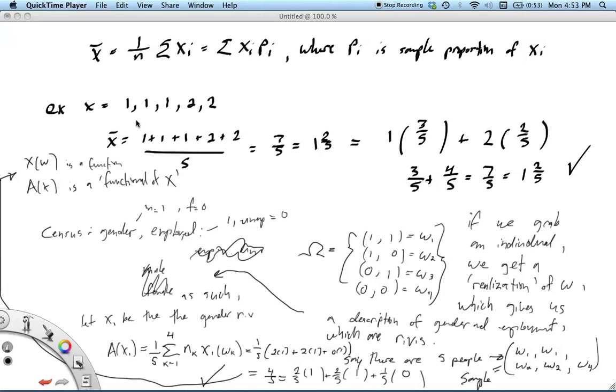To give a concrete example of that, if our sample was 1, 1, 1, 2, 2, we see that we could take the sample mean by simply adding them up and dividing by 5, and we get 7 fifths.